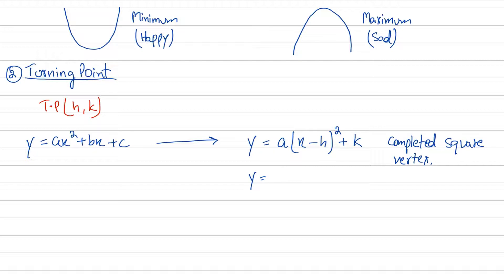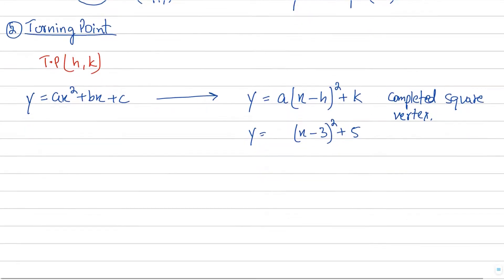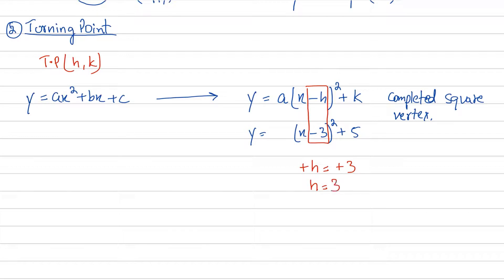For example, if I randomly convert an equation into completed square form and get something like (x minus 3) squared plus 5 — these are just random values to prove a point — we can easily determine H and K by comparing. We see that minus H equals minus 3, so the minus and minus cancel and H equals 3. And K we can see right away is 5, so K equals 5. Therefore our turning point is (3, 5). So in the vertex form or completed square form, we can directly read off our turning point coordinates.